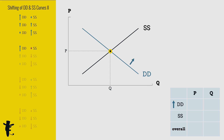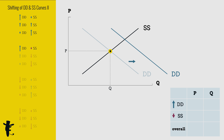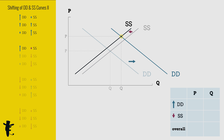When the increase in demand is huge, demand shifts way to the right. When the decrease in supply is small, supply shifts left just a little. Price increases, quantity increases.